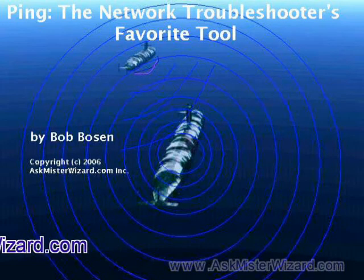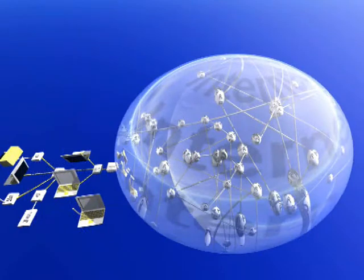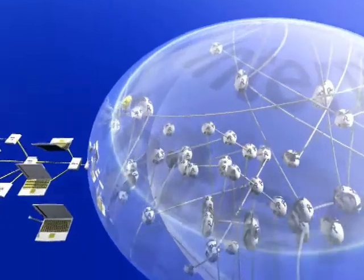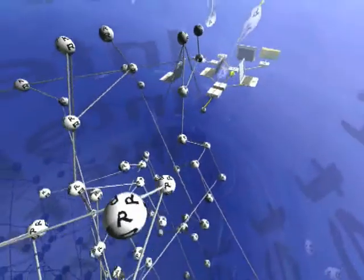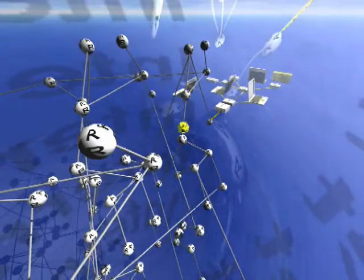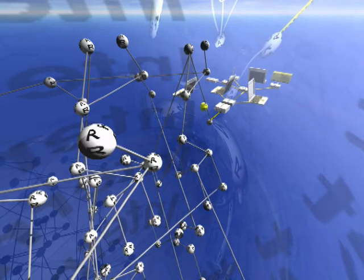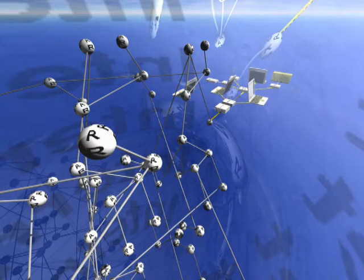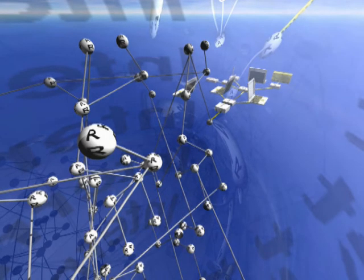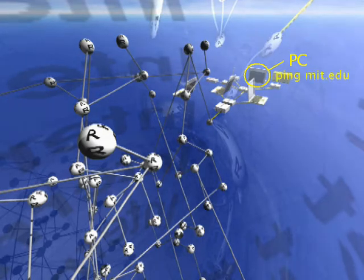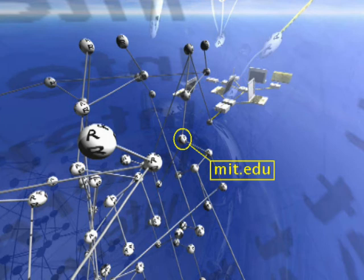For this movie, let's shift our vantage point inside the internet so we can watch that ping operation in greater detail. All internet protocol packets include a provision for expiration if they spend too much time traveling around the internet. This provision is useful because it is possible for misconfigured internet routers to send packets in the wrong direction.